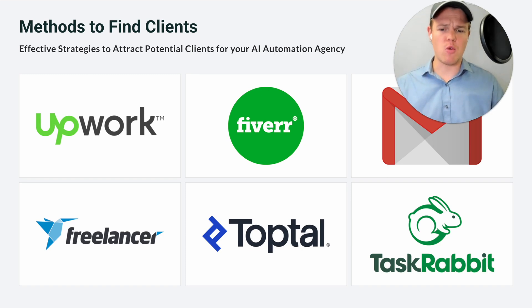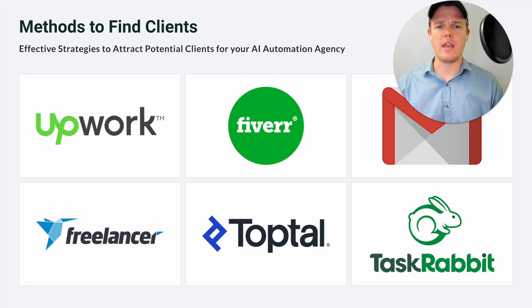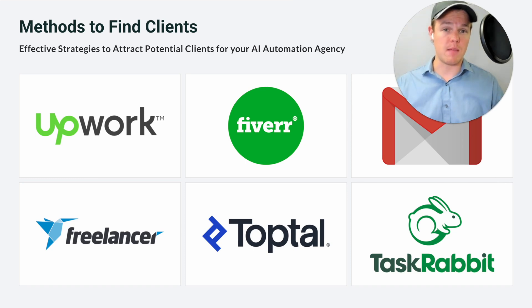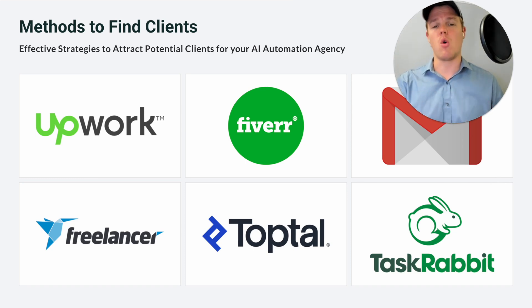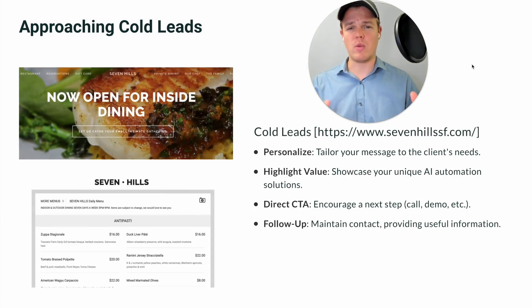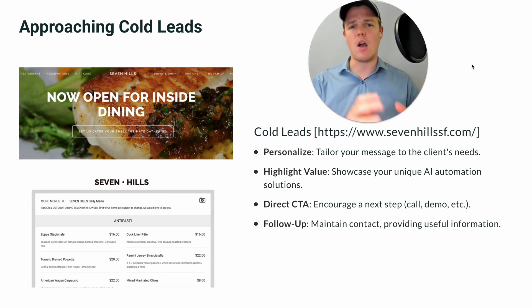Past platforms like Freelancer, TopSoul, and TaskRabbit, there's another alternative way to acquire clients. This could be through organic methods such as social media, but also could be through cold leads with email. In order to showcase this, let's look at an example restaurant found here in San Francisco and see what their pain points were and see how we can apply AI automation to it.